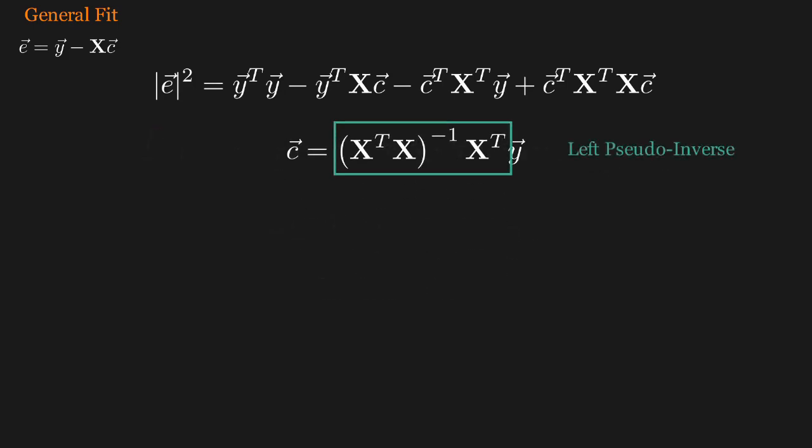If you're ever looking this stuff up, this handy matrix product is called the left pseudo-inverse. It's a good one to have in your back pocket.